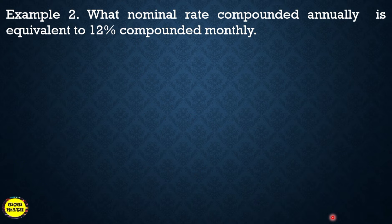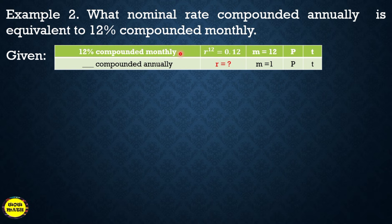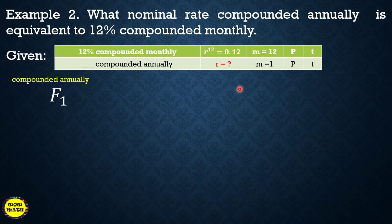Example number two: what nominal rate compounded annually is equivalent to 12% compounded monthly? Given: 12% compounded monthly, the nominal rate is 0.12 and the frequency of conversion is 12. We need to find the nominal rate compounded annually, which has a frequency of conversion of 1.